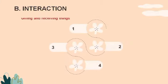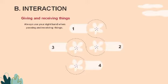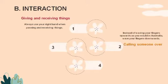For interactions: when giving and receiving things, always use your right hand. Using the left hand is considered very impolite. Slightly bow your head as you say thank you. When calling someone over, instead of waving your finger upwards as you would in Australia, wave your fingers downwards.